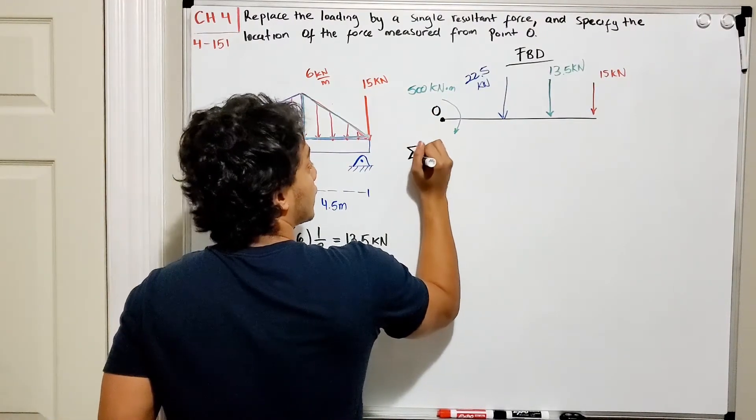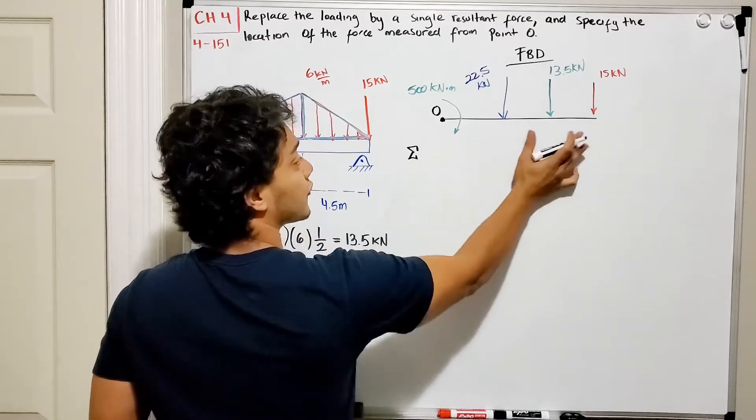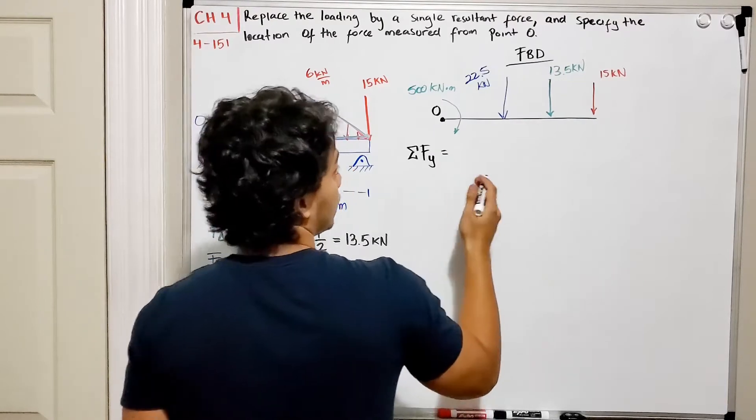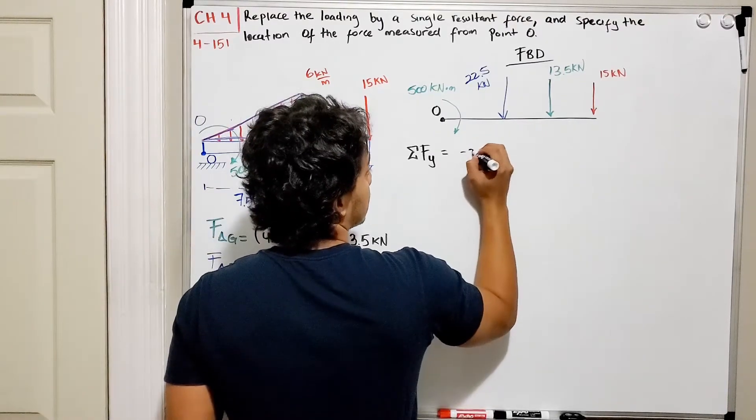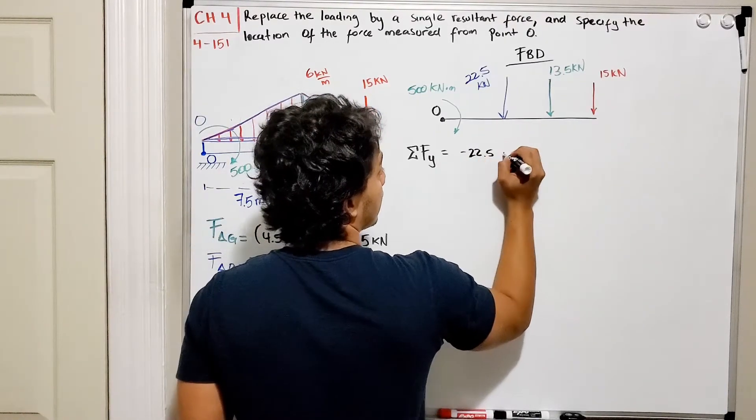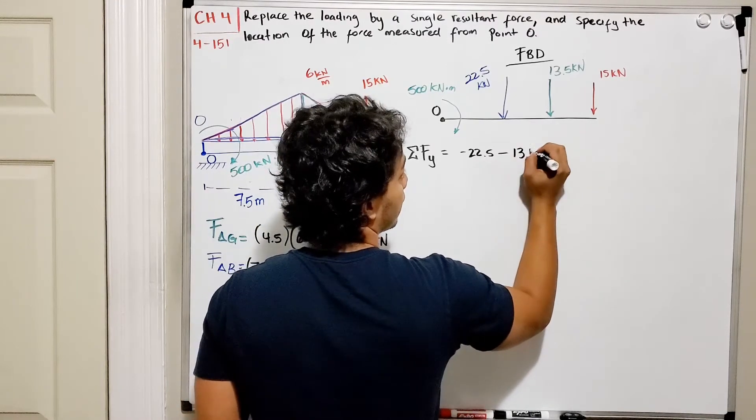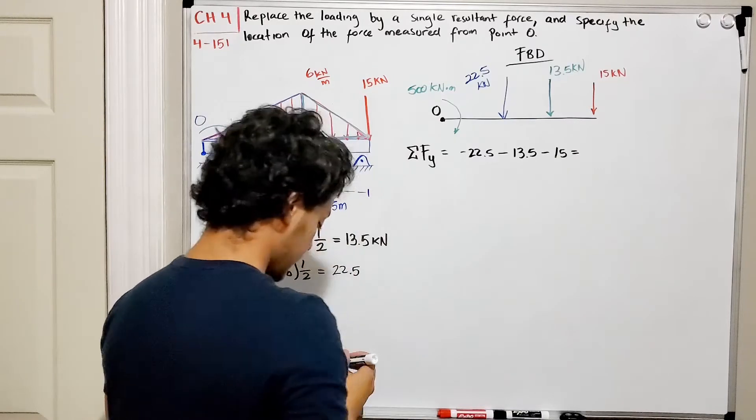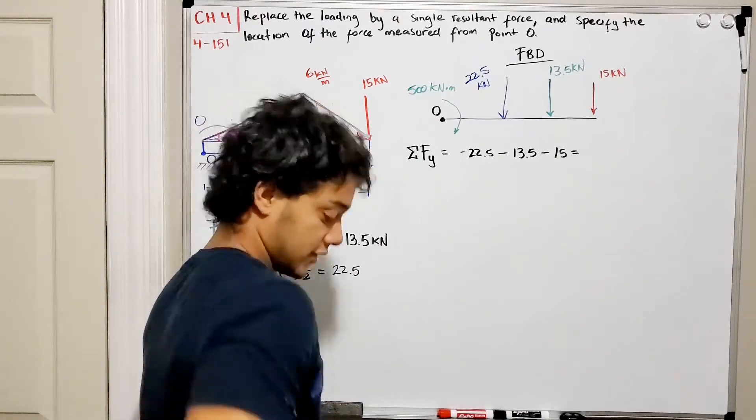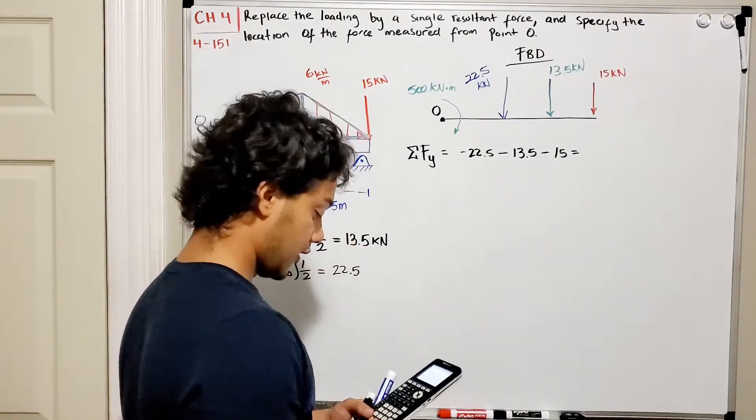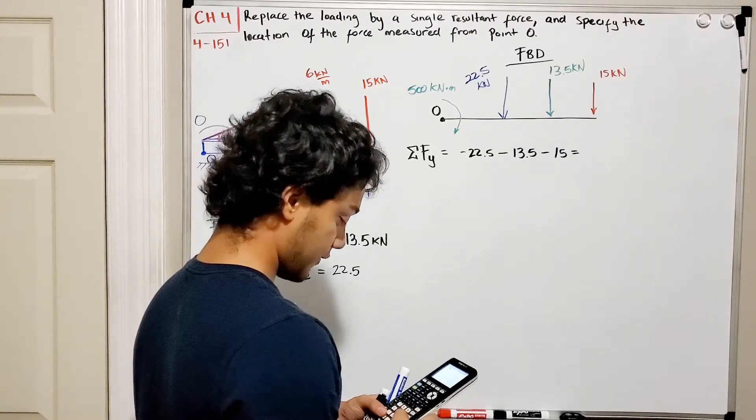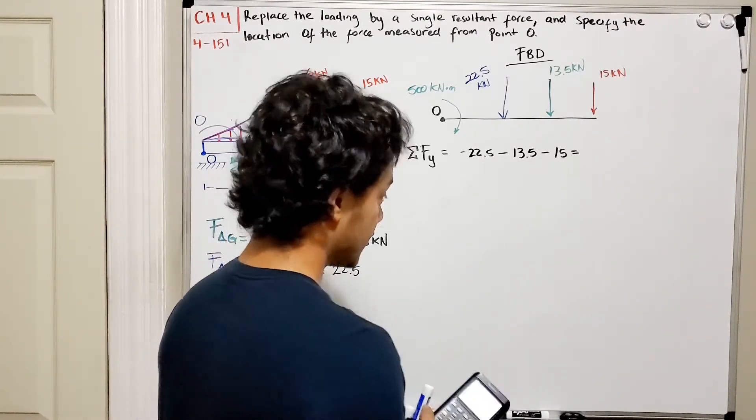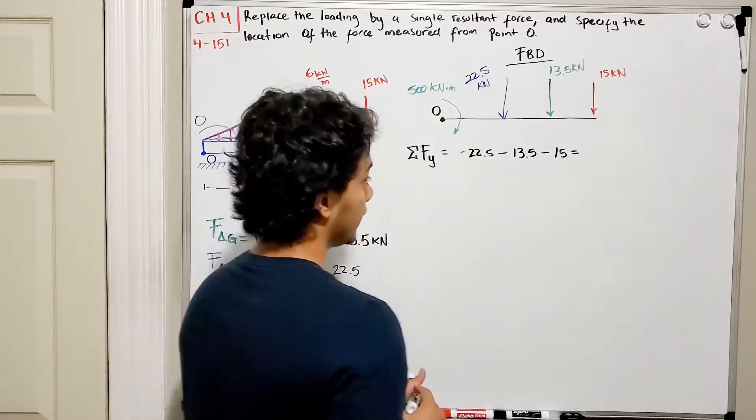So this is my point O just for reference. Now if we do the summation of forces, all the forces are in the y direction, so I'm gonna do the summation of forces in the y direction. What do I have? Well, I have -22.5 - 13.5 - 15. Let's check that out.